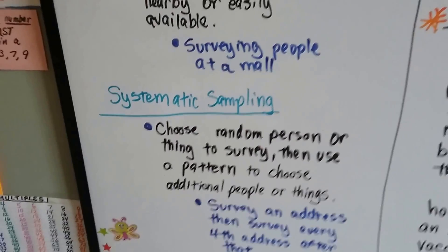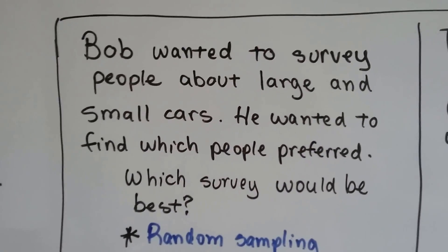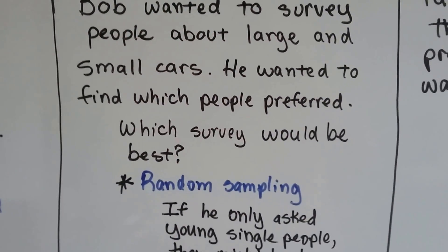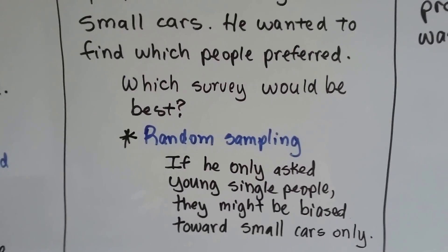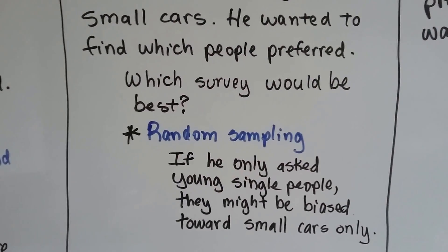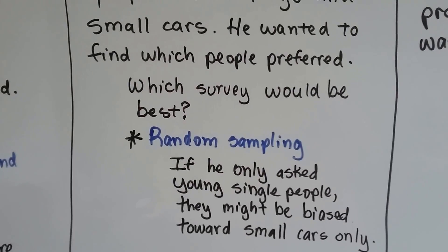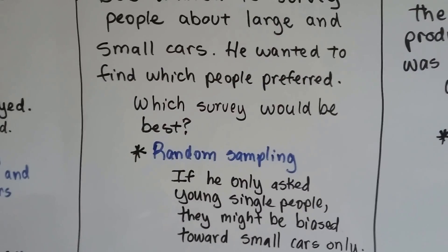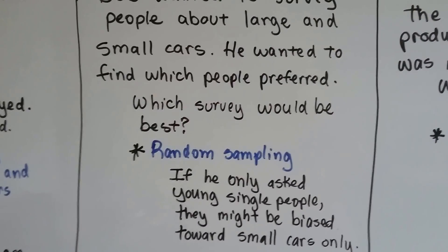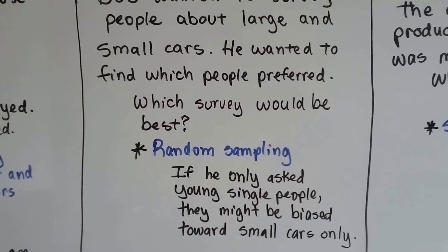Bob wanted to survey people about large and small cars to find out which people preferred. Which survey method would be best? Random sampling. If he only asked young single people, they might be biased towards small cars. If he asked only large families, they might be biased towards large cars. Random sampling would be best because he can get an idea of all types of people and their car preferences.